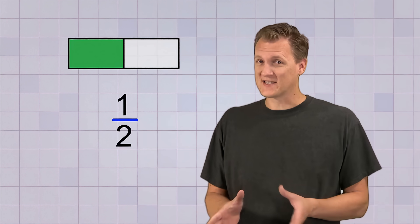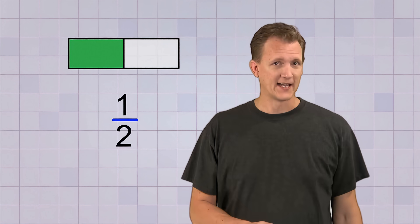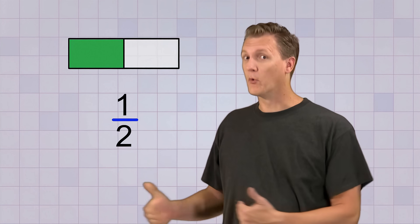To help us understand what simplifying a fraction really means, let's take a look at the simplest fraction I can think of, 1 over 2. Now this is already as simple as it can possibly be, so let's go the other way and complicate it by dividing our rectangle here up into more parts.